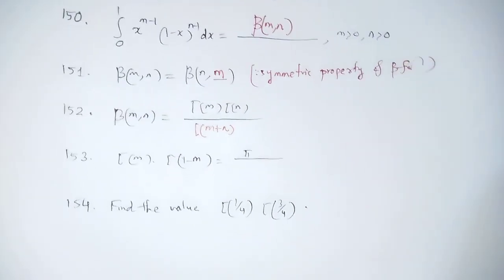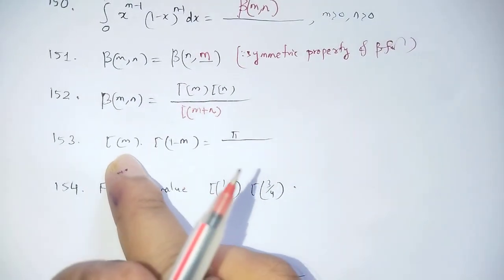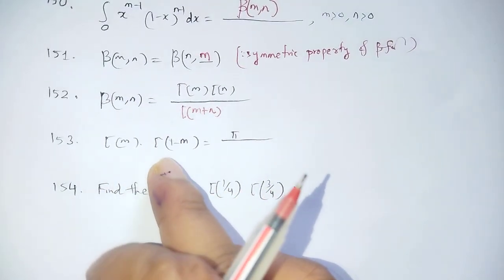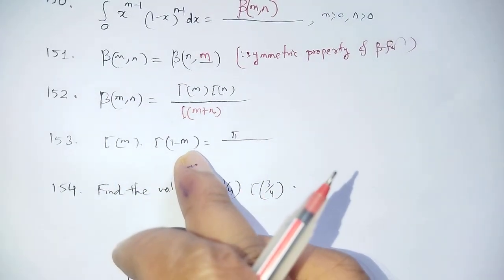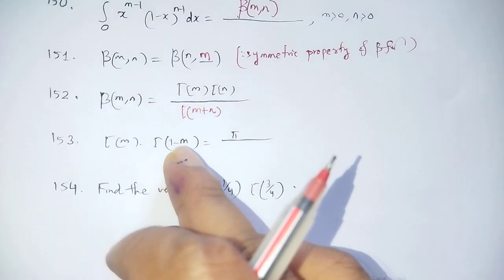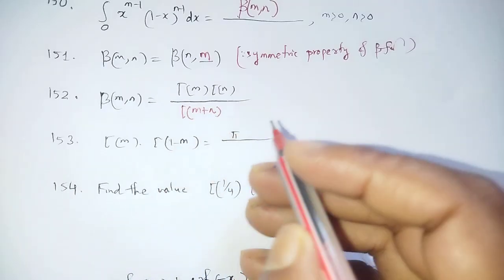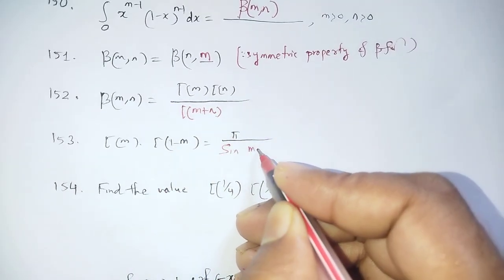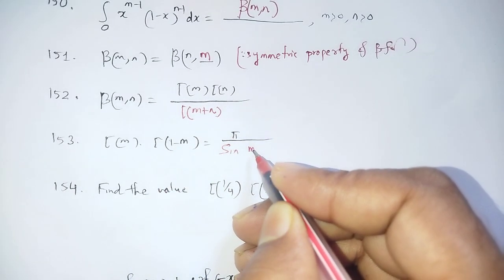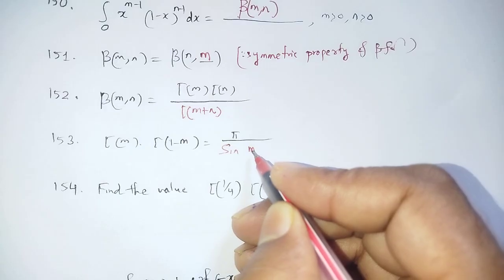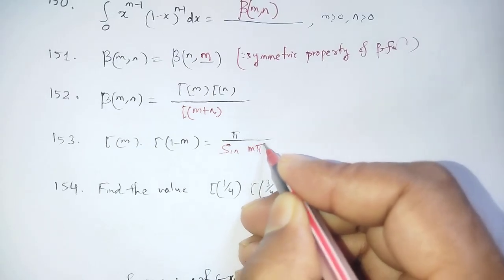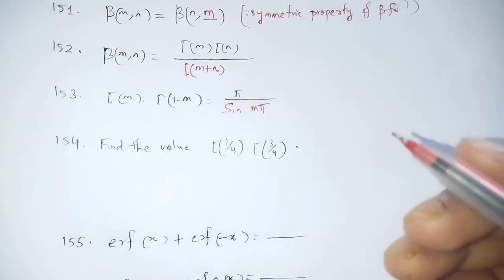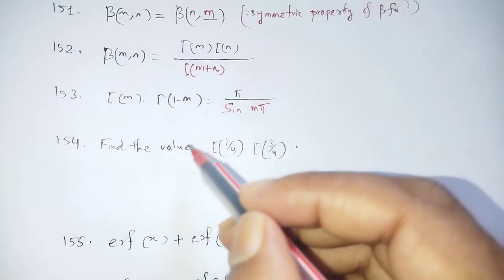The relation between Beta and Gamma functions: β(m,n) = Γ(m)·Γ(n) / Γ(m+n). Another important formula: Γ(m)·Γ(1-m) = π / sin(mπ).